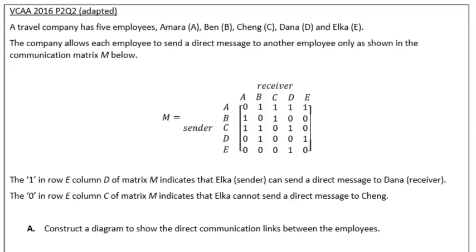A reminder with our communication matrices, the way we're reading them is in from the left and then up to the top. What that means is if I'm reading in from the left up to the top, the one here in row two column one tells me that Ben can communicate directly with Amara. We need to remember that when we're reading them.